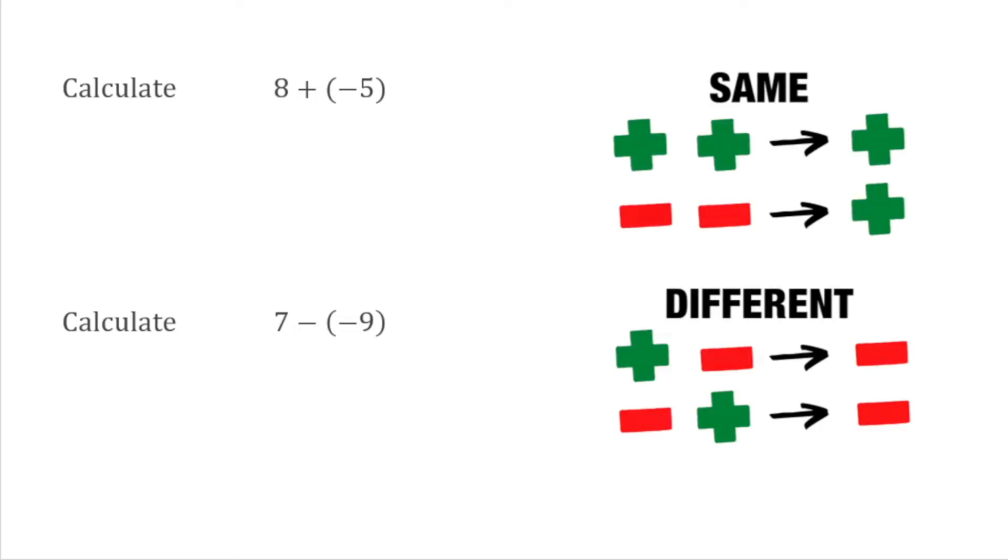If I have a double sign with the same operation, I can replace that with a single addition. And if I have a double sign with different operations, I can replace that with a single subtract. We can also follow these rules when we multiply and divide negative numbers, but we'll get to that in another video.